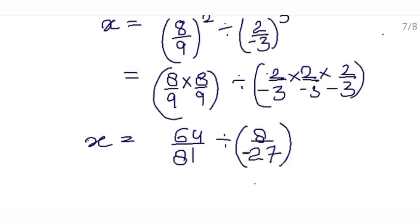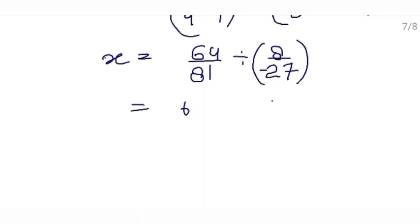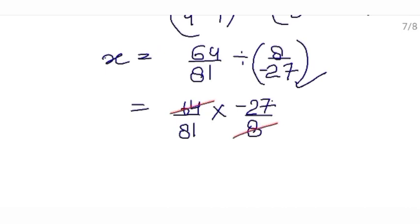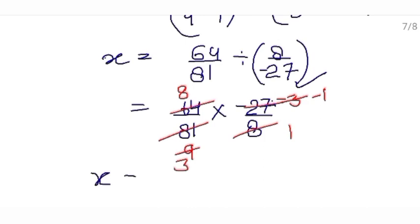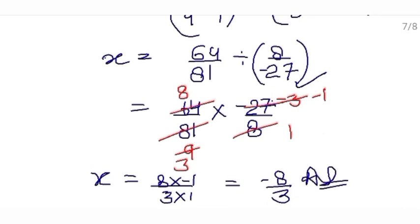And that will be of minus sign. When you divide two rational numbers, write the first rational number same, replace the division sign by multiplication, and write the reciprocal of the next rational number: minus 27 upon 8. This numerator 64 and this denominator 8 are both divisible by 8 — 8 ones are 8, 8 eights are 64. This 81 and 27 are both divisible by 9 — 9 threes are 27, 9 nines are 81. Then 3 ones are 3, 3 threes are 9. So in numerator you have 8 × minus 1, and in denominator 3 × 1, which equals minus 8 upon 3. This is the answer — this is the rational number you need to multiply.